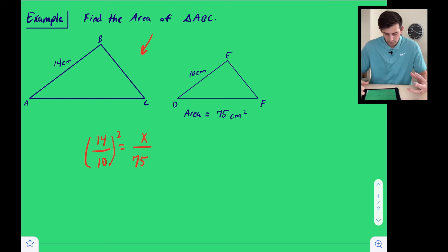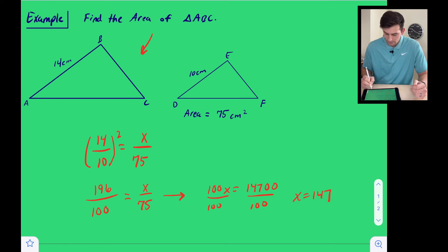So now we're going to square both the numerator and the denominator. This is like power of a quotient, property of an exponent. So 14 squared is 196, and 10 squared is 100. And so now we can go ahead and cross multiply. This is going to give us 100X equals 14,700. And now we can divide both sides by 100. So we get X equals 147.